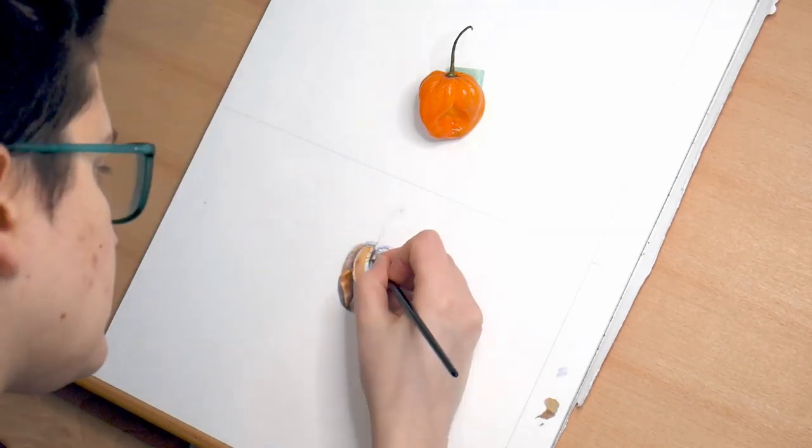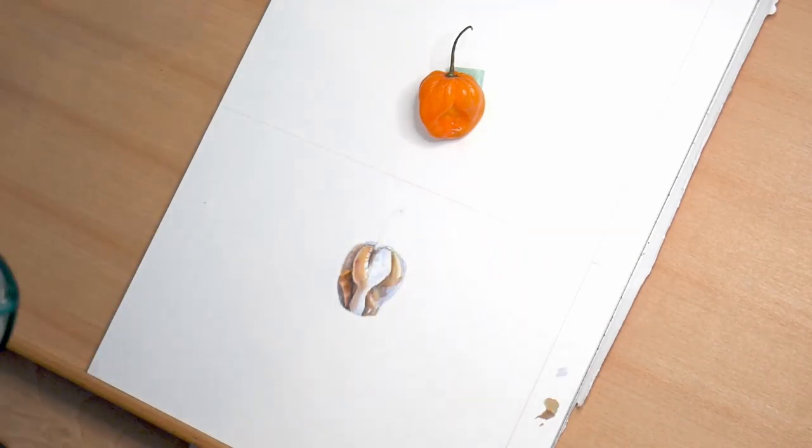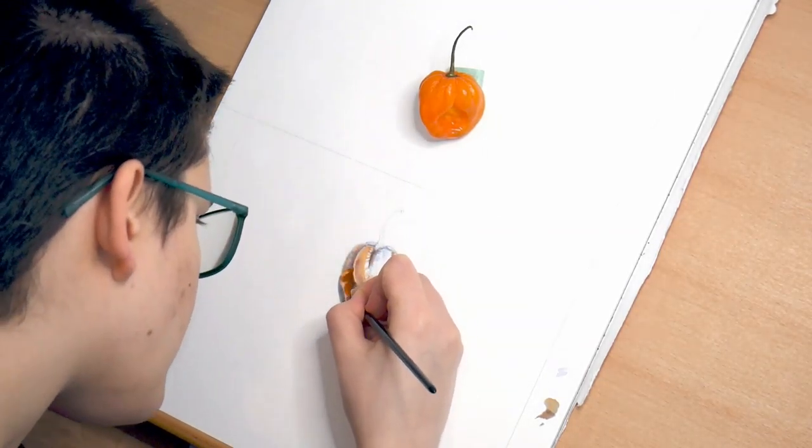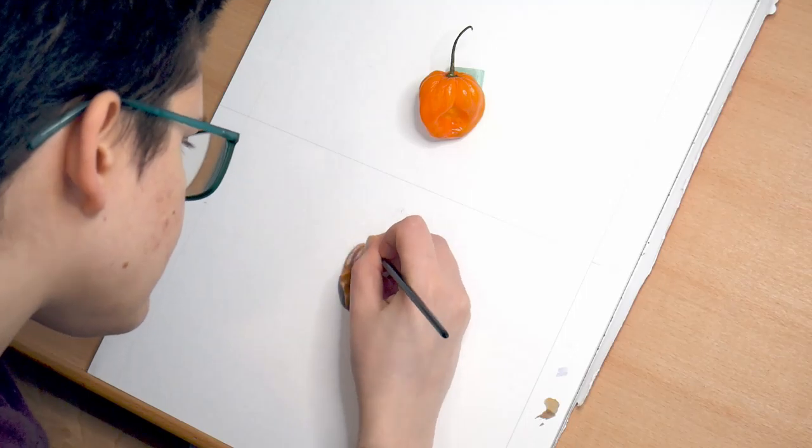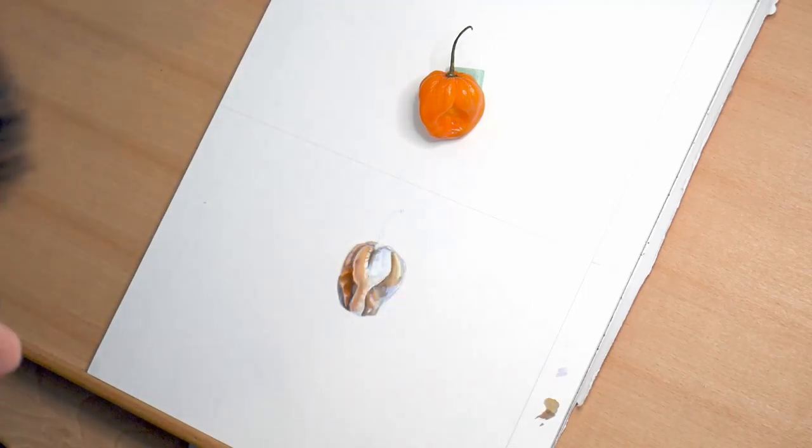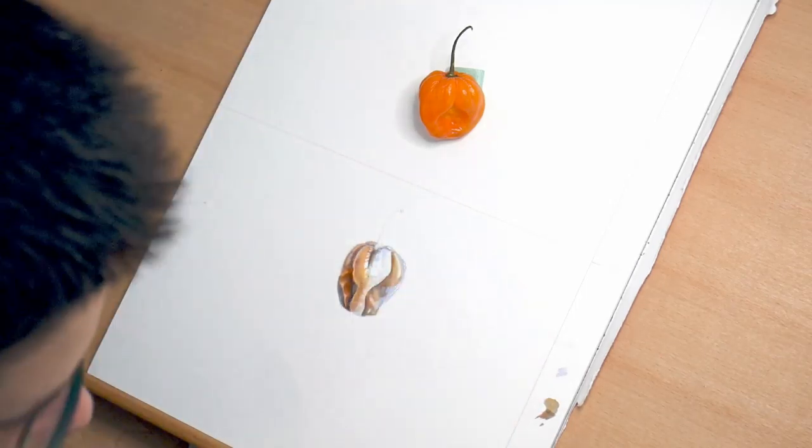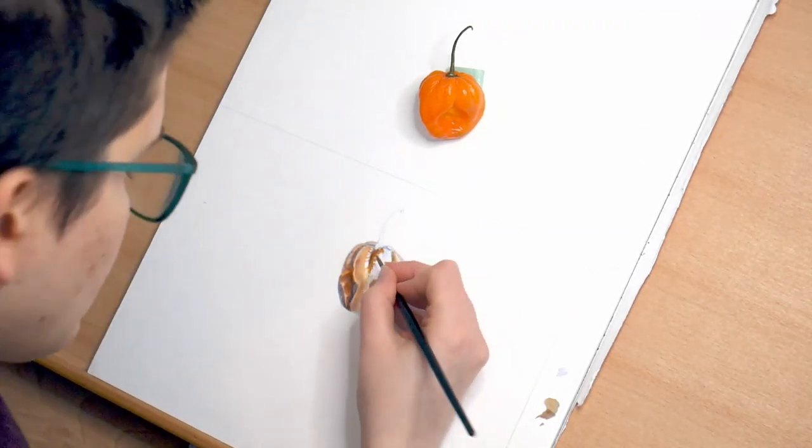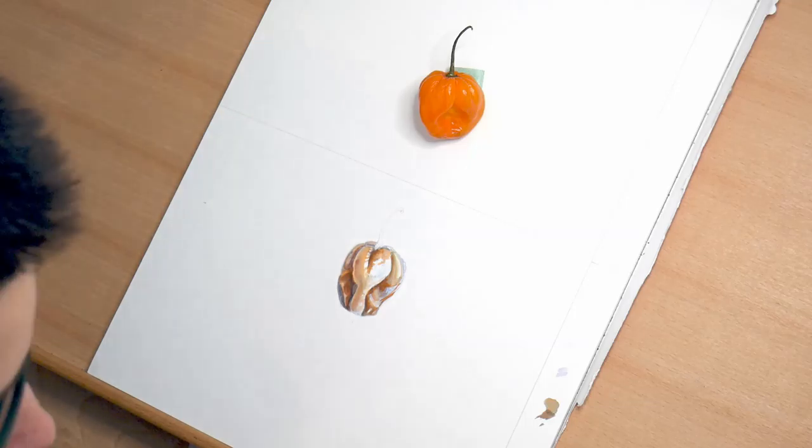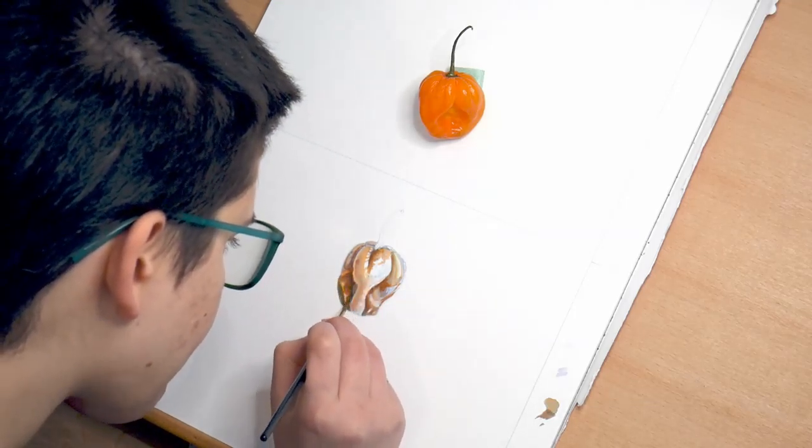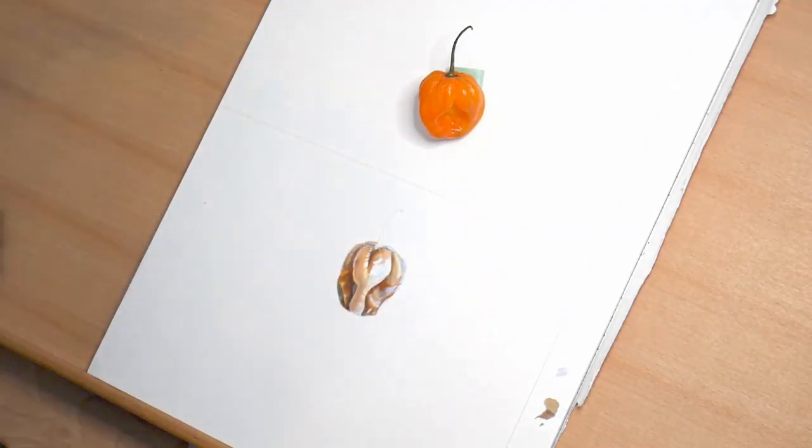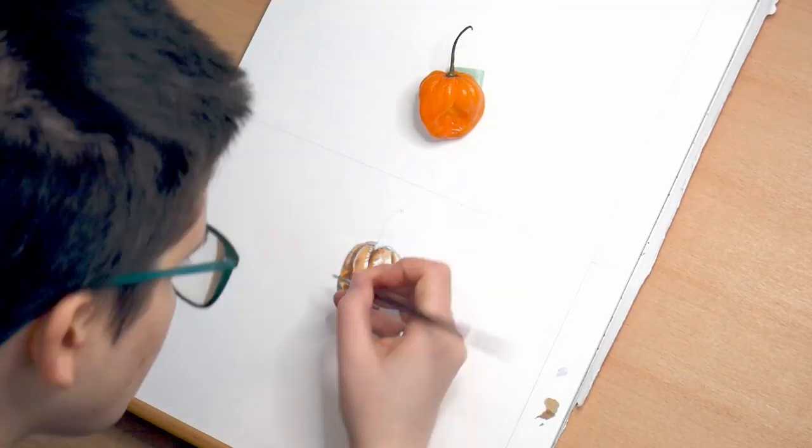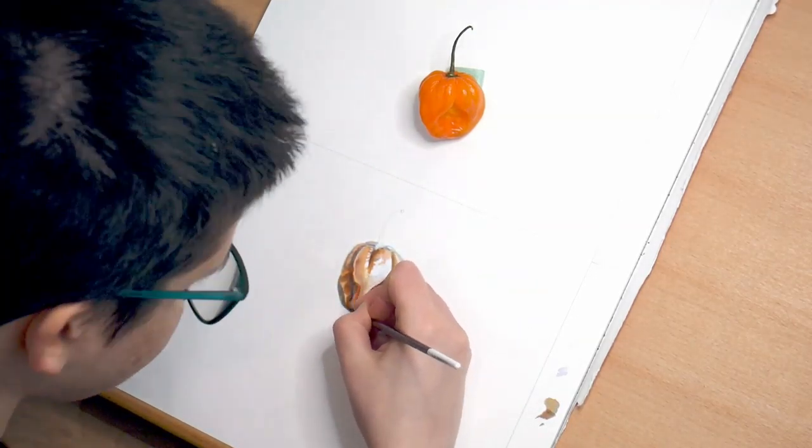For most of this painting, I've been using a size 3 brush, but now you'll start seeing me switch. Sometimes I'm using a size 3, sometimes I'm using a shorter bristled size 0. So now it's beginning to look a little bit more like a pepper, but it's still quite muted. As I add more layers, it will get brighter and brighter.